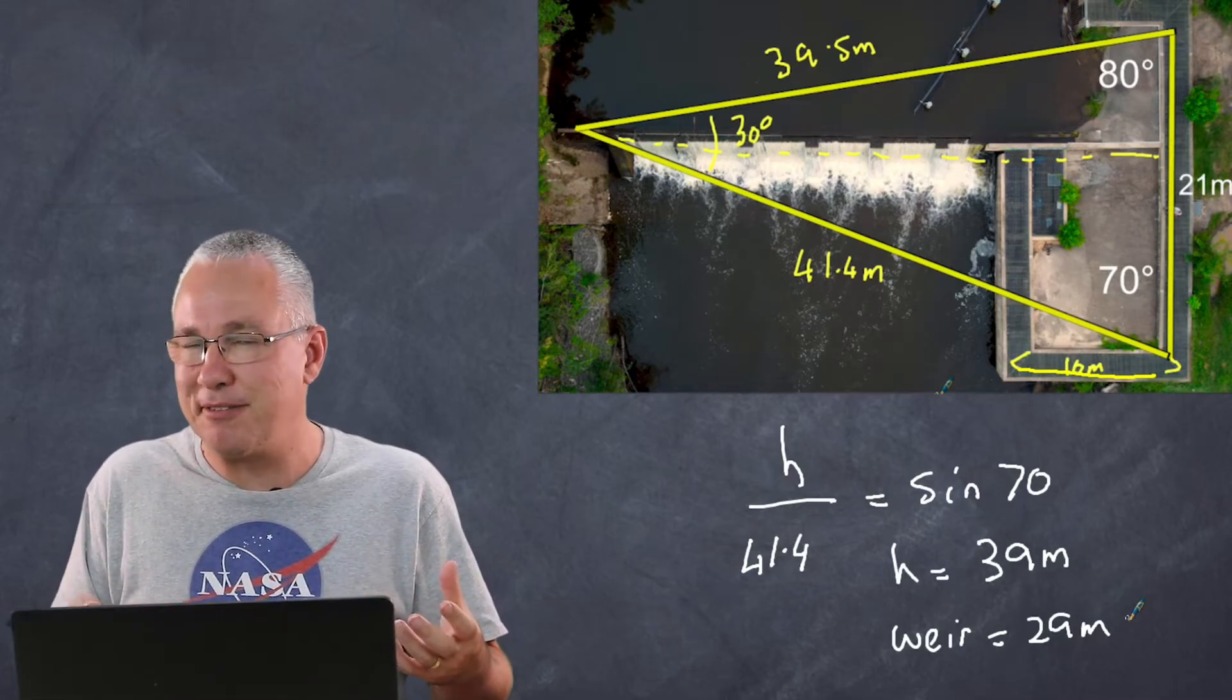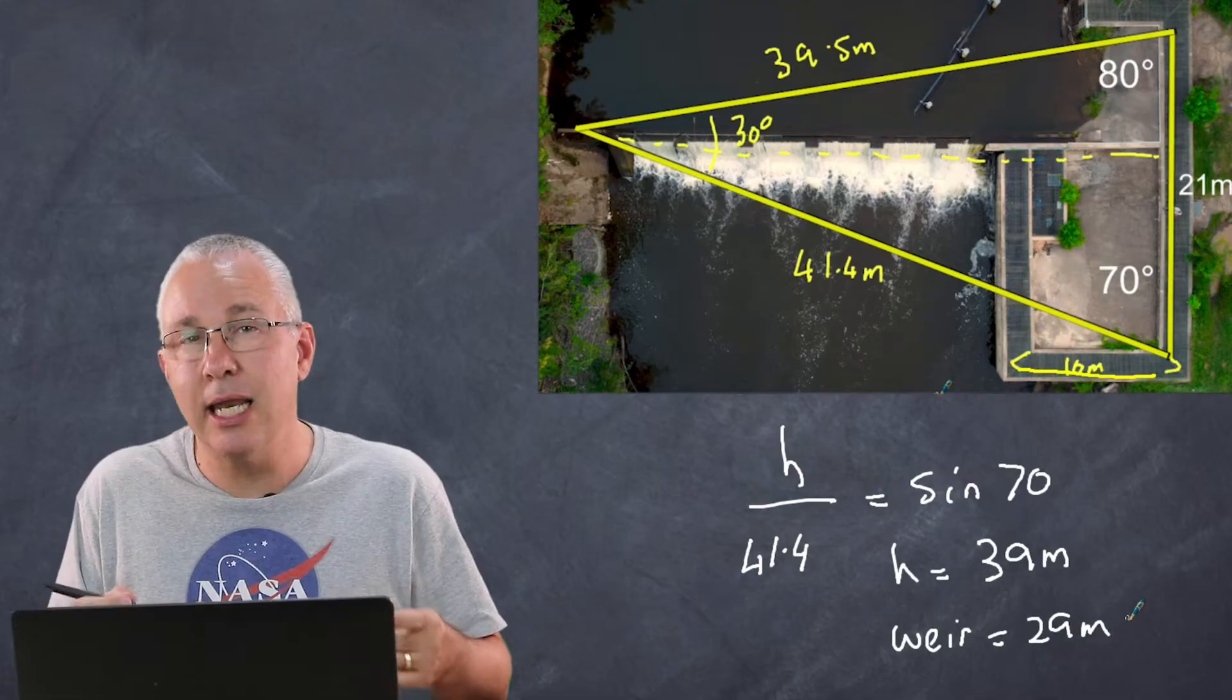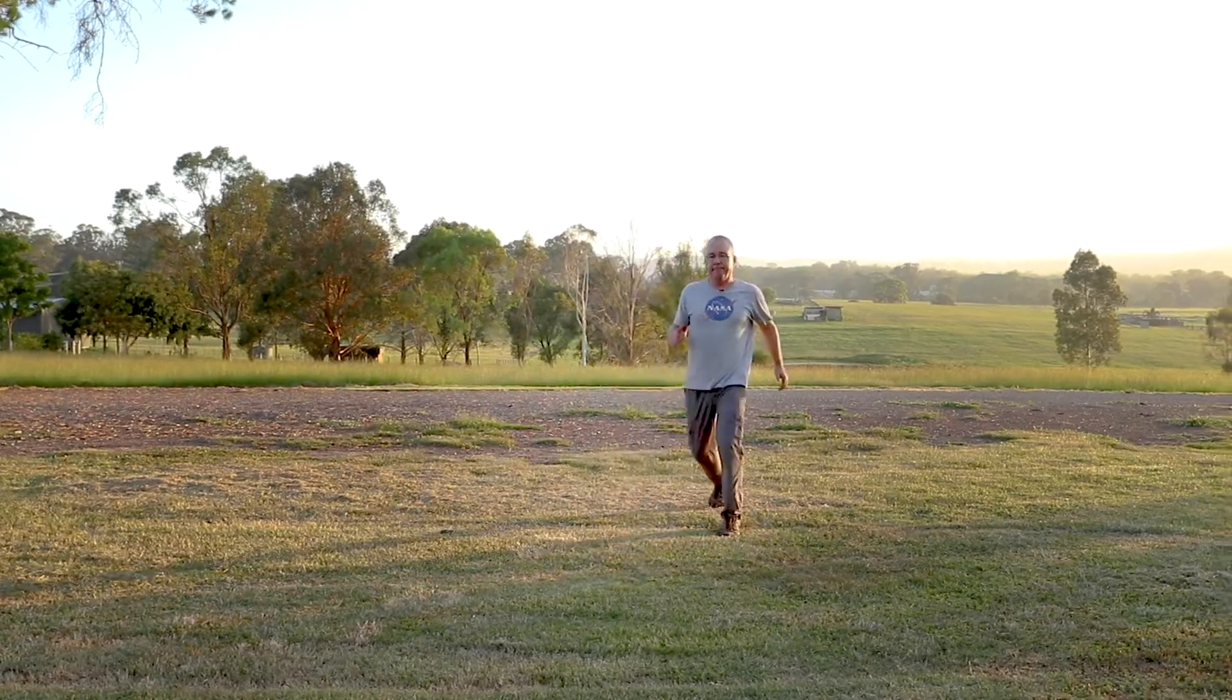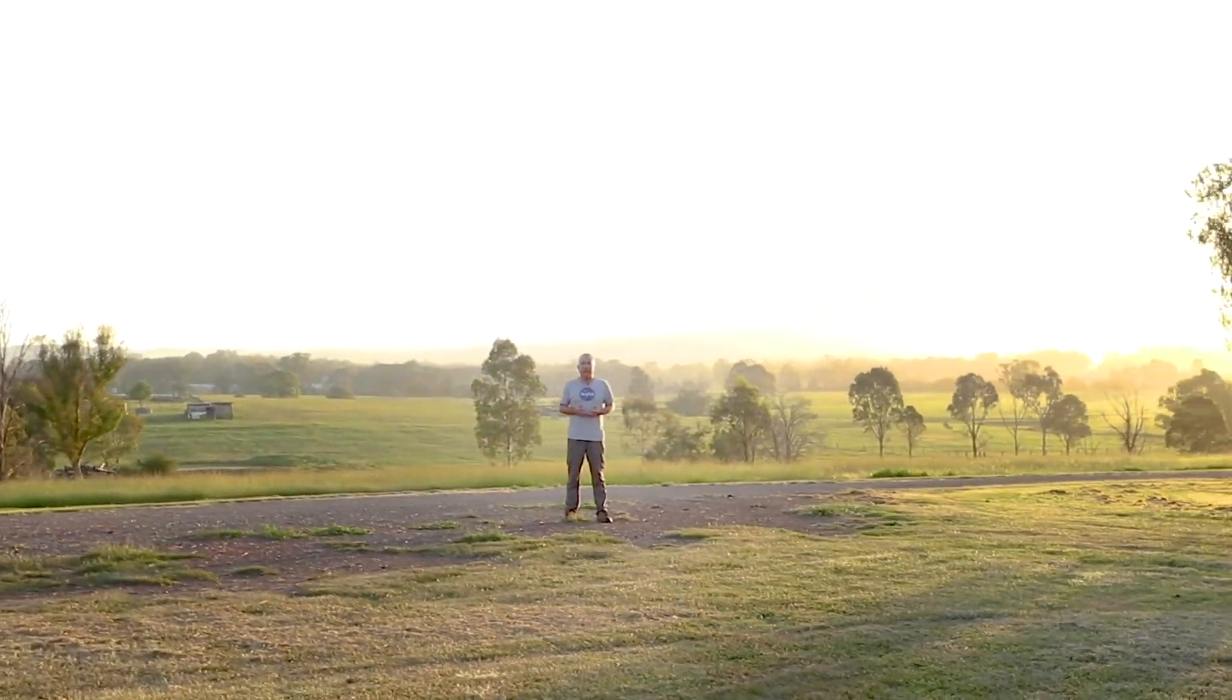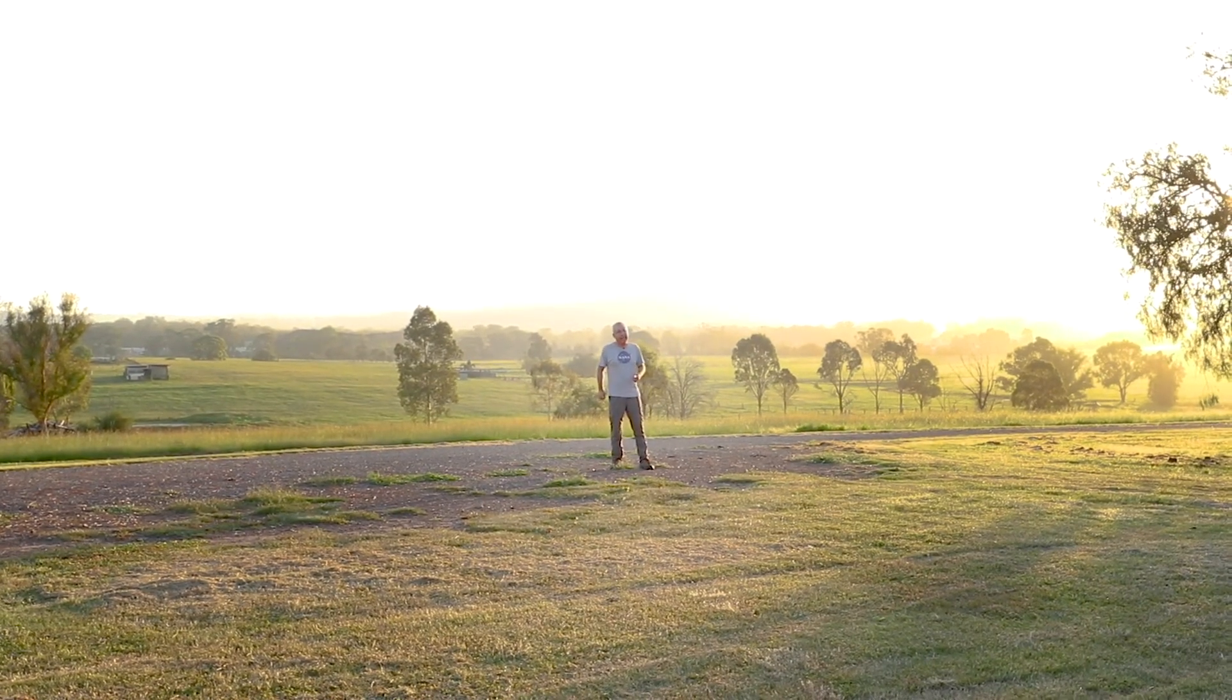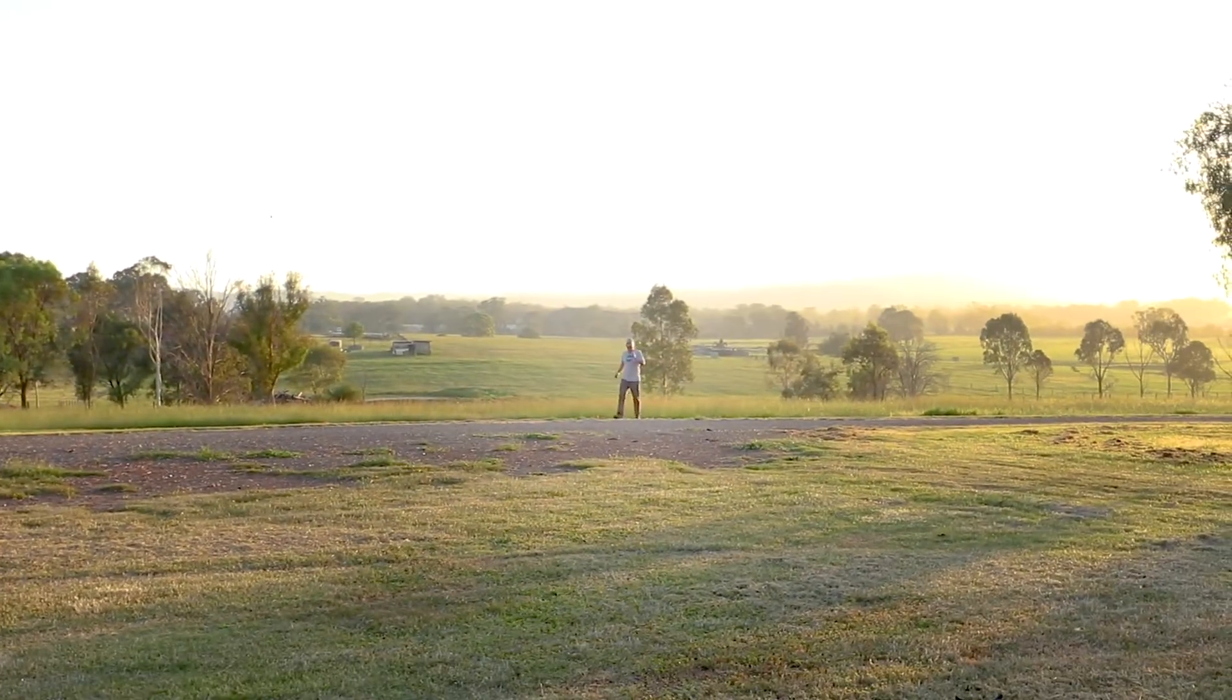But we need to also examine it from a slightly different perspective, and that is by a term called parallax. To get a sense of parallax, what I'm going to ask you to do is observe me as the camera moves from left to right. Pay attention to what I do with respect to the background. My position hasn't changed much, but the background has changed a lot. Now what's going to happen if I increase my distance away from the camera? Did you notice the background hasn't shifted as much as when I was closer?